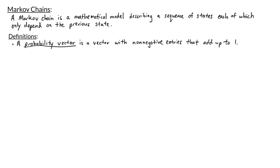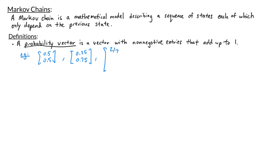Let's start with some definitions. A probability vector is a vector with non-negative entries that add up to one. Some examples of probability vectors are 0.5, 0.5 — this is a vector whose entries add up to one. Another example would be 0.25, 0.75. And a three-dimensional example: 2/7, 4/7, and 1/7. In each of these vectors, we have non-negative entries that add up to one.